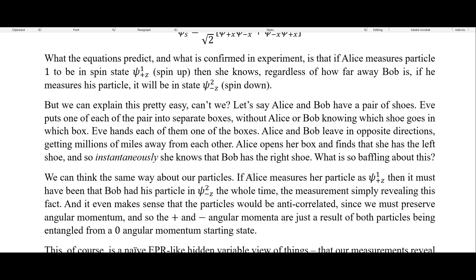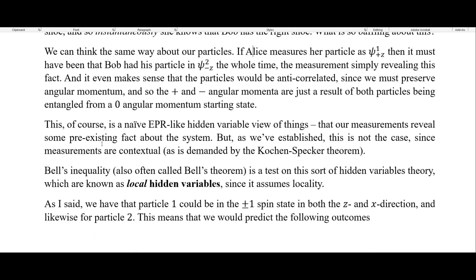Since we must preserve angular momentum, the spin up plus spin down angular momenta are just a result of both particles being entangled from a zero angular momentum starting state. So if you have a zero angular momentum starting state and you split it off into two, in order to preserve angular momentum — conservation of angular momentum — one would have to be spinning in the up state and the other in the down state in order to cancel each other out and get back to that zero angular momentum. So this of course is a naive EPR-like hidden variable view — that our measurements reveal some pre-existing fact about the system, communicated ahead of time when they were in causal contact with each other, so preserving locality.